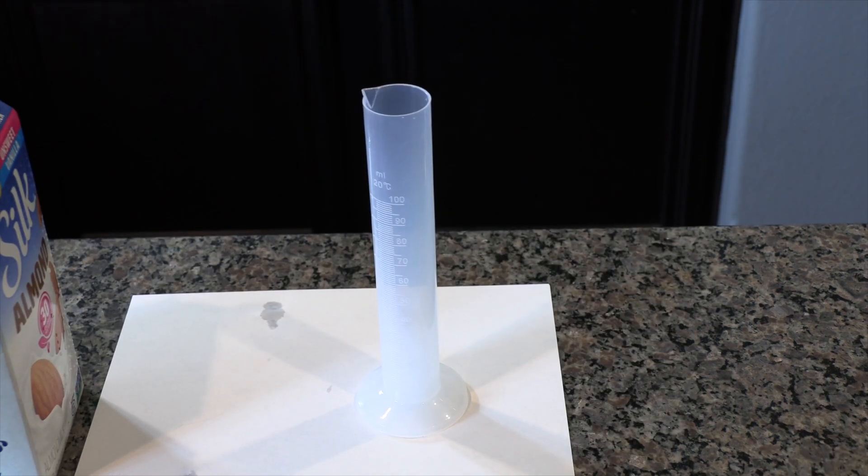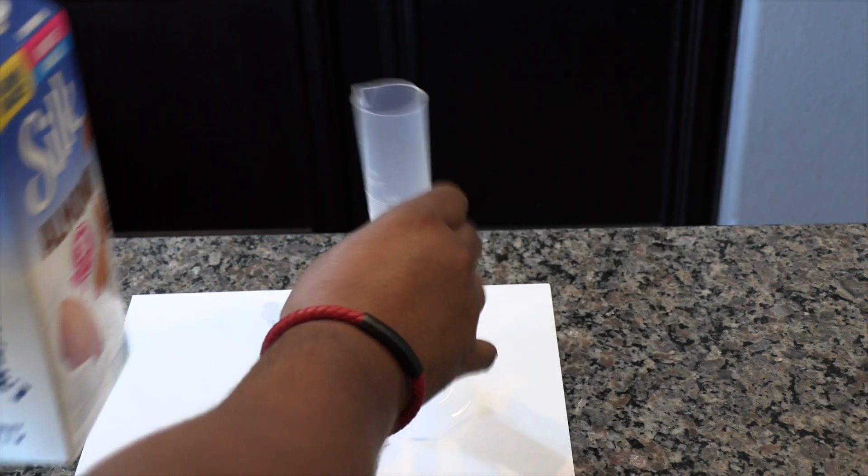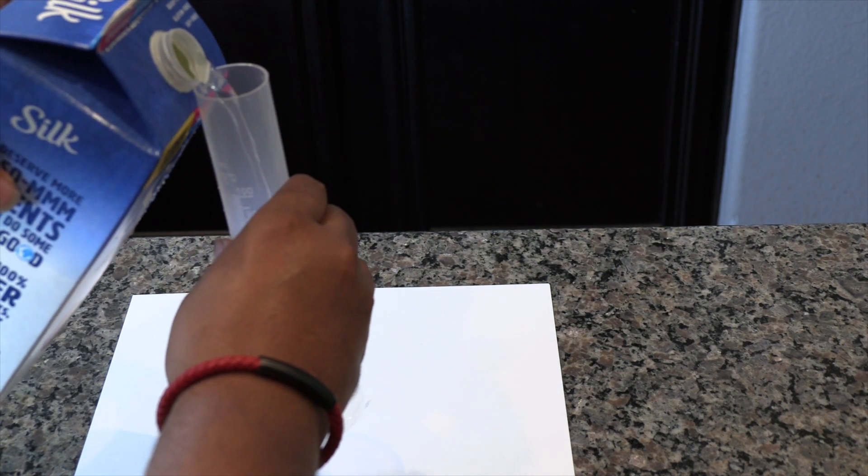Fill the milk jug again and then empty it into the graduated cylinder and determine the number of liters contained in the jug.